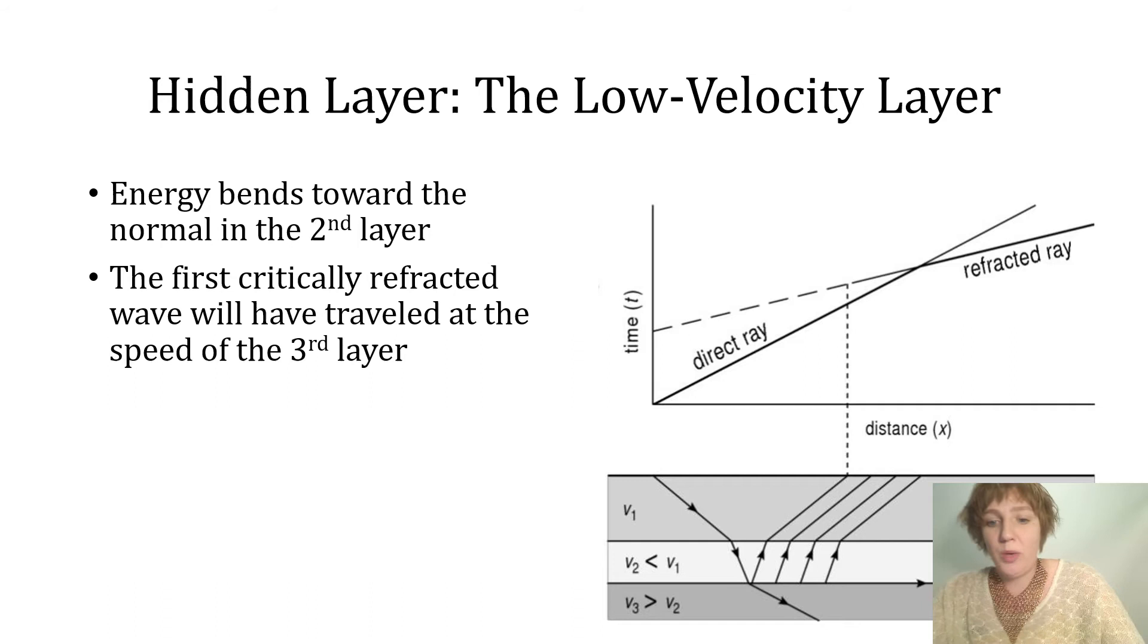We have rays coming in being refracted away from the normal, so seismic energy never travels along this interface at the speed of v2. We just don't get that at all. But then when it goes into the third layer, it can hit at the angle of refraction and travel at the velocity of the third layer.